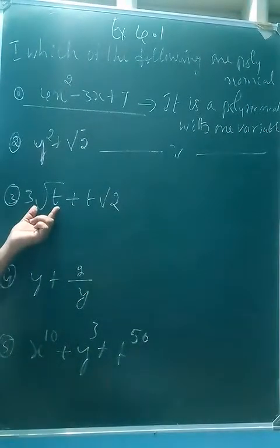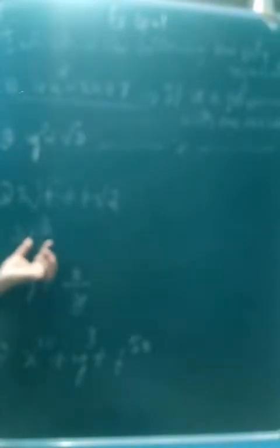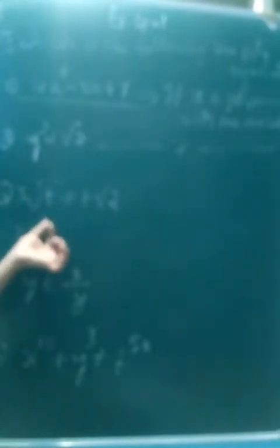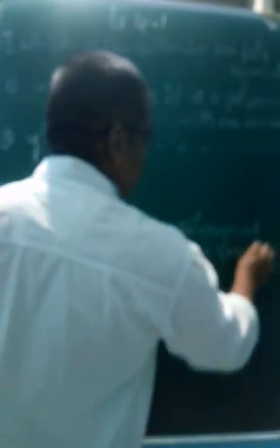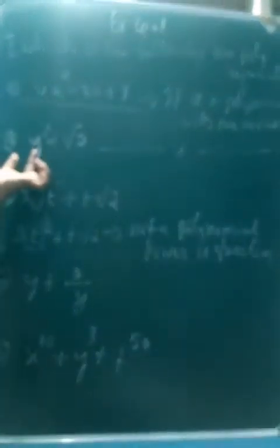For the third one, √t is there. √2 is a constant, but √t is a variable. We can rewrite it as t to the power of one-half. That power is a fraction. So it is not a polynomial because the power is a fraction.